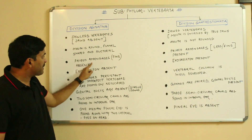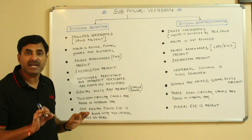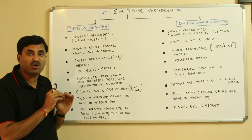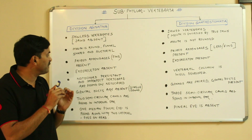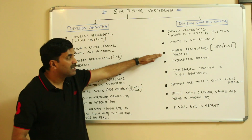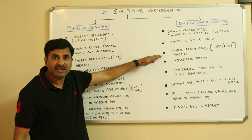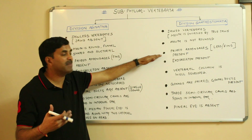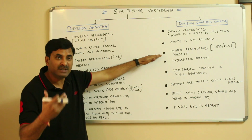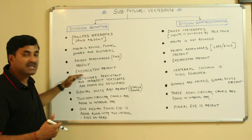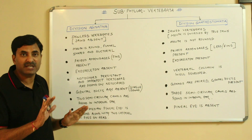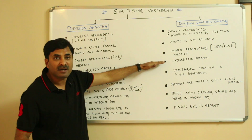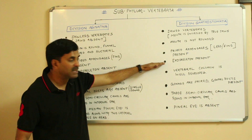Third point: paired appendages are absent in Agnatha — they do not have any paired appendages or paired fins. But in Gnathostomata, paired appendages are present; they may have paired legs or paired fins. Also, exoskeleton is absent in Agnatha, while members of division Gnathostomata do have an exoskeleton.